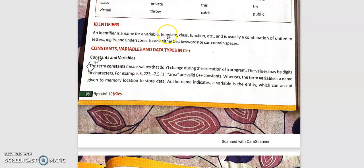Identifiers mean variables, templates, classes, functions, all names. All these concepts are identifiers, constants, variables, and data types. Data types in C++ are the same as C, just a few modifications.